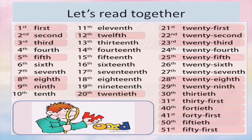Now let's read together: first, second, third, fourth, fifth, sixth, seventh, eighth, ninth, tenth. Next: 11th, 12th, 13th, 14th, 15th, 16th, 17th, 18th, 19th, 20th, 21st, 22nd, 23rd, 24th, 25th, 26th, 27th, 28th, 29th, 30th, 31st.